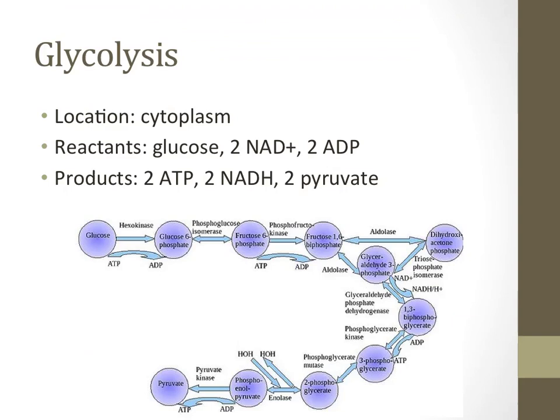Since all organisms do glycolysis, it needs to take place in a location that all organisms possess, the cytoplasm or the cytosol. As you can see in the picture provided on this slide, the process is quite complex. What generally happens, however, is that a glucose molecule is broken in half into two pyruvate molecules.